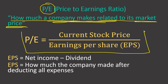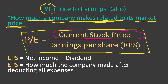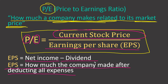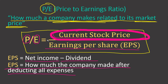This is the formula. The P/E ratio is current stock price — that's the price you see if you look at the chart of that stock, so that's the P, the current price. And the E stands for earnings per share — how much the company made after deducting all expenses, so it's net income minus dividends. The price-earnings ratio is current price of a stock divided by how much the company made.